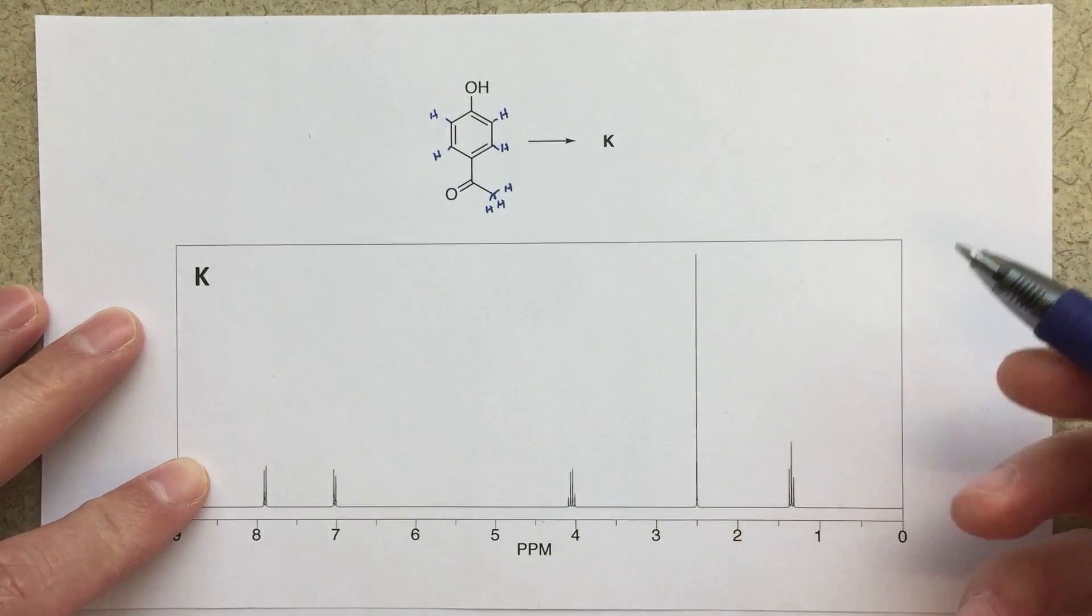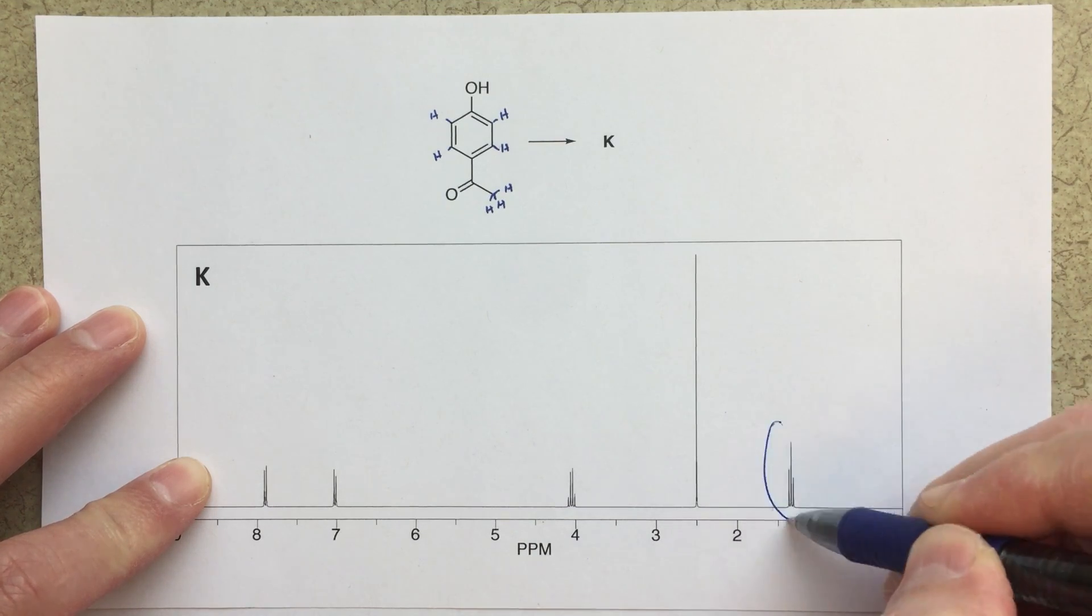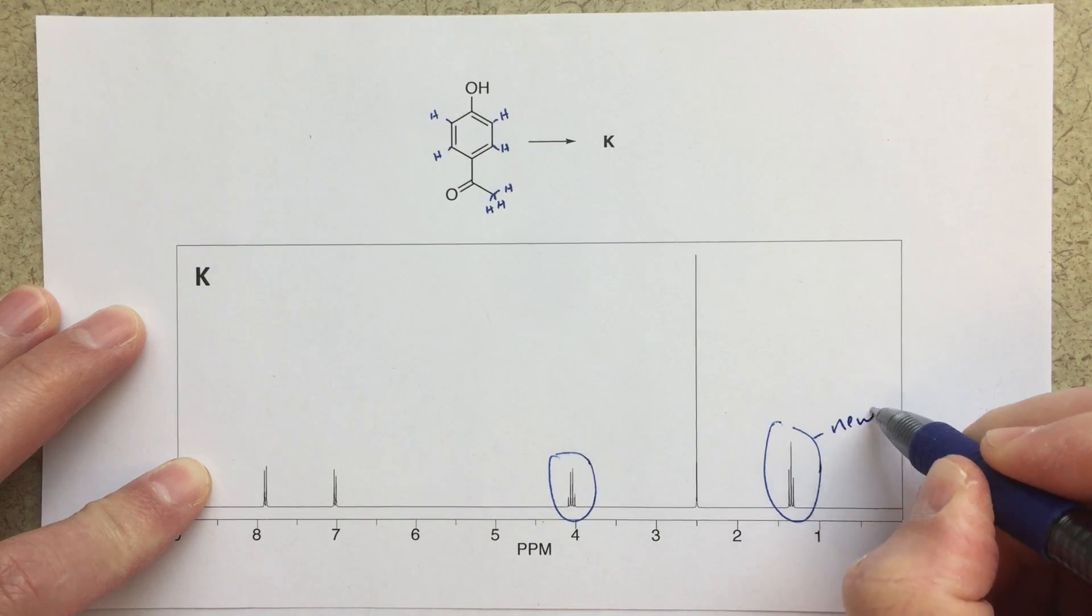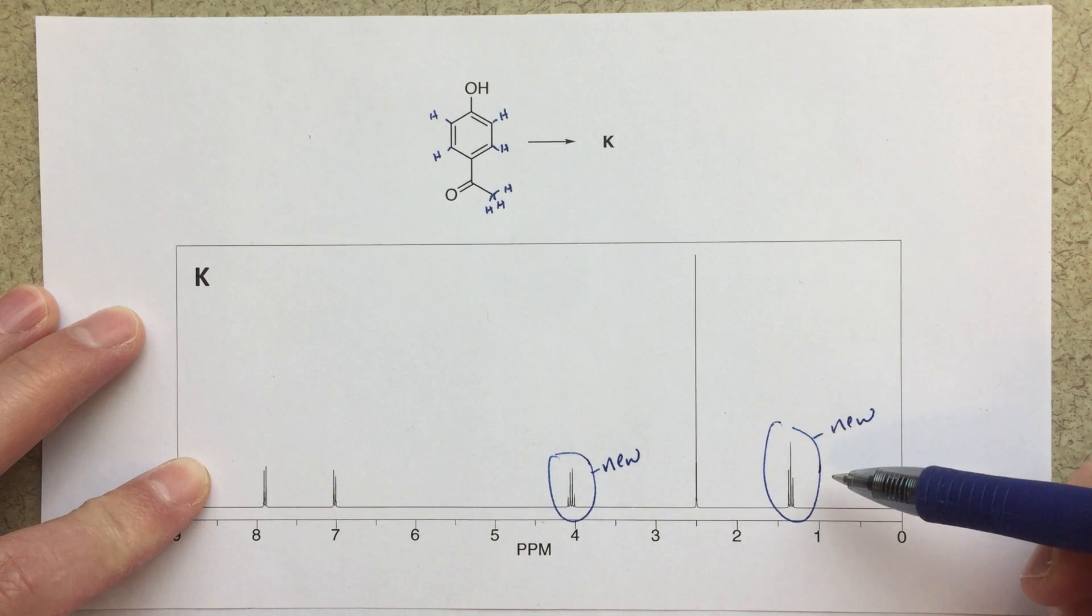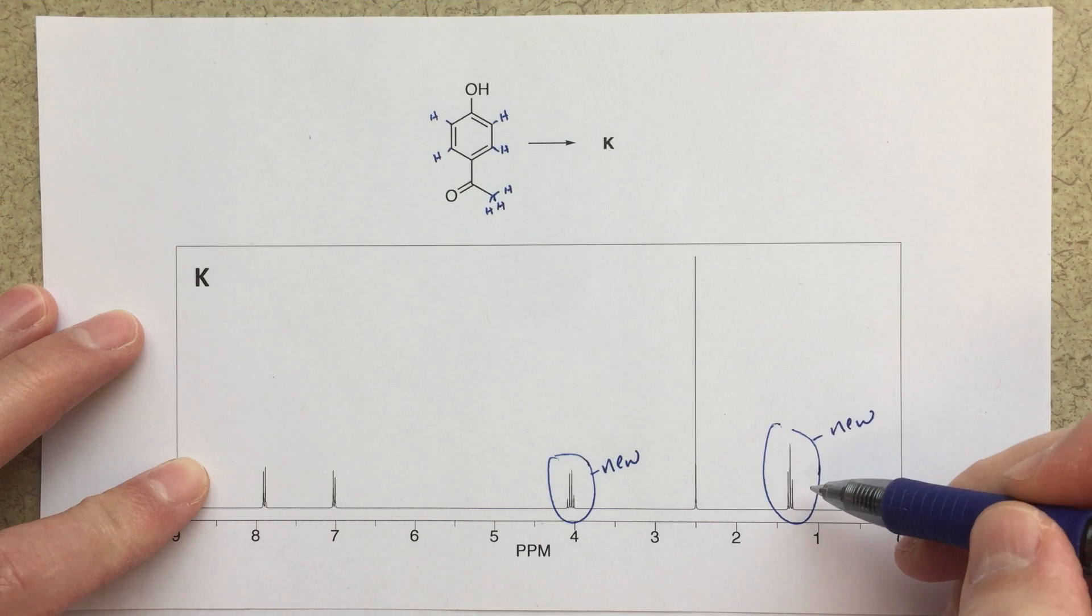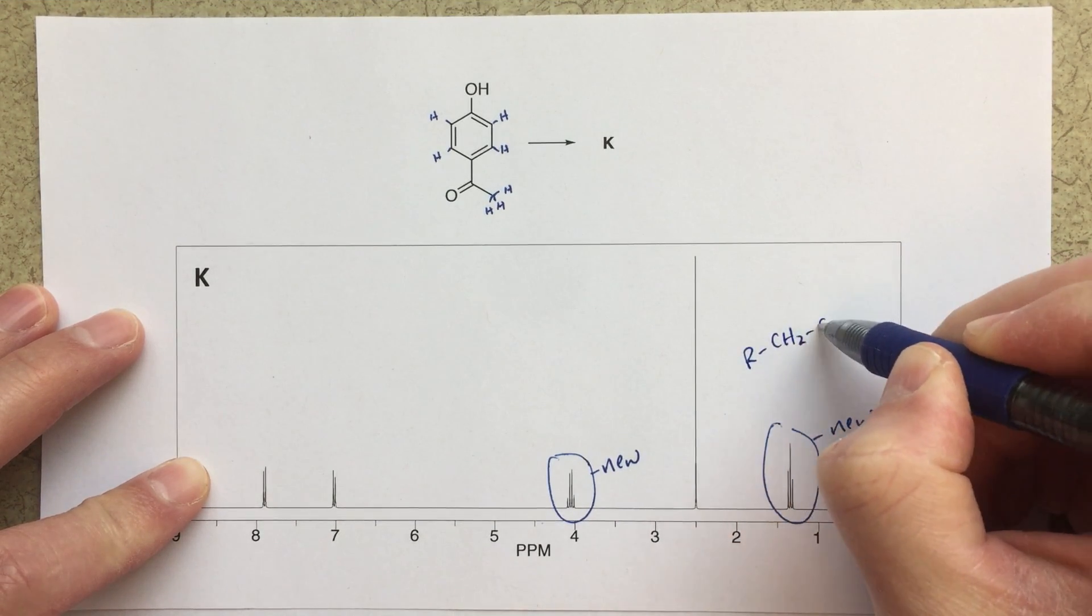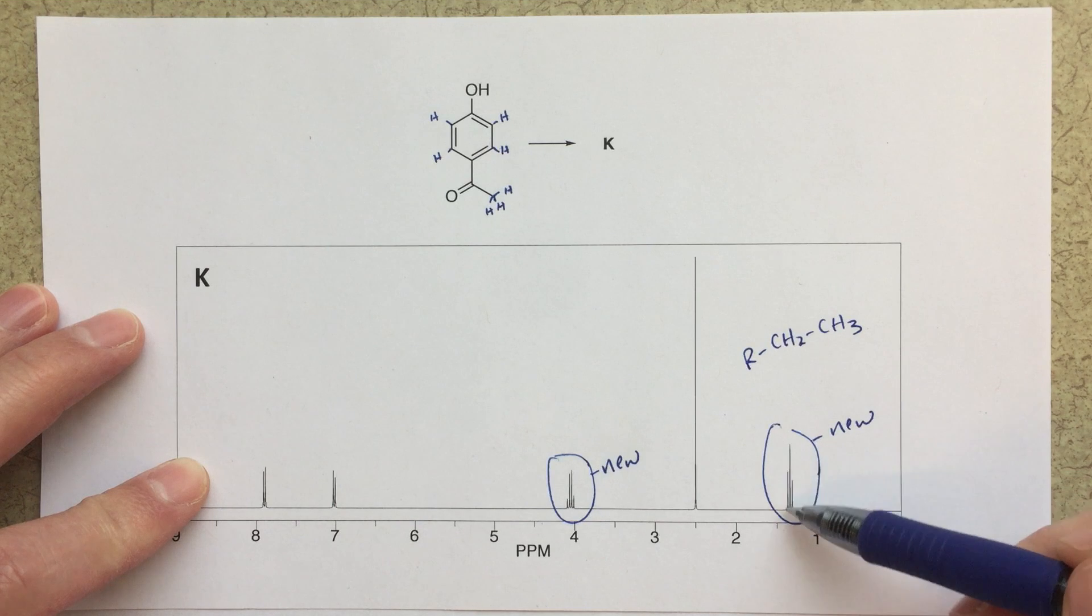So that's not new. But what is new are these two peaks here. So let's write new. And when I look at these two different signals, to me it's very clear that we have something like this CH2 CH3, that we have an ethyl group. And the reason I'm saying that is that here I see a triplet.